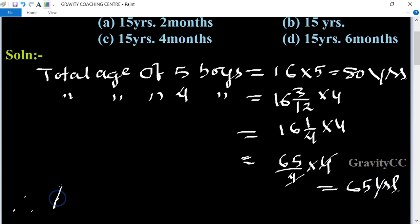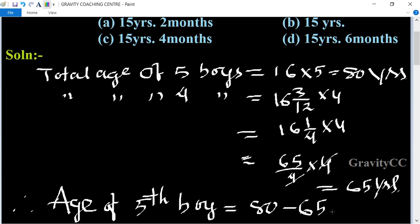Therefore, the age of the fifth boy equals 80 minus 65, which equals 15 years. This is the required answer.